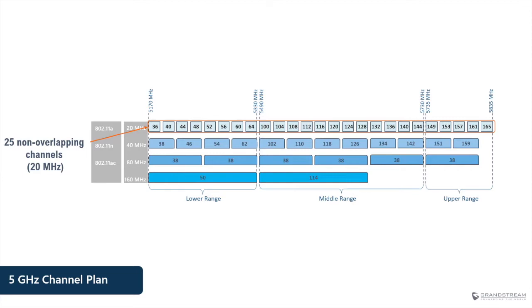I would not recommend using 80 megahertz or 160 megahertz channels unless you have a good reason. One challenge with wider channels is in a dense wireless network where you need to deploy multiple APs and reuse channels. The wider the channels, the fewer channels you have available. With 40 megahertz you only have 12 channels instead of 25; with 80 megahertz only six channels; and with 160 megahertz only two channels. In North America you can end up with just one, making 160 megahertz channels essentially useless in a dense wireless network.